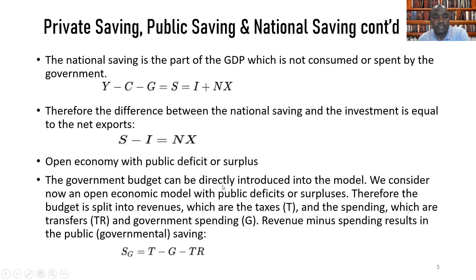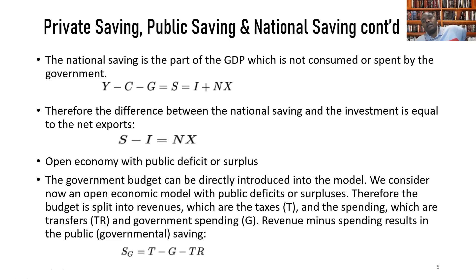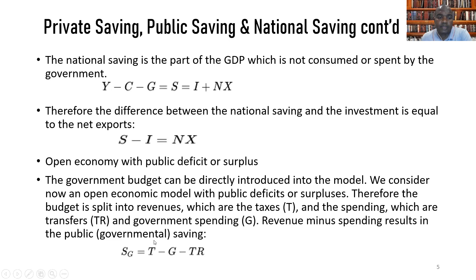The government budget can be directly introduced into this model. We now consider an open economy model with budget deficits and surpluses. The budget is split into revenues — primarily taxes, though some revenues may come from borrowing or grants from offshore sources — and spending, which includes transfers and government expenditure. Revenue minus spending results in the public governmental saving.